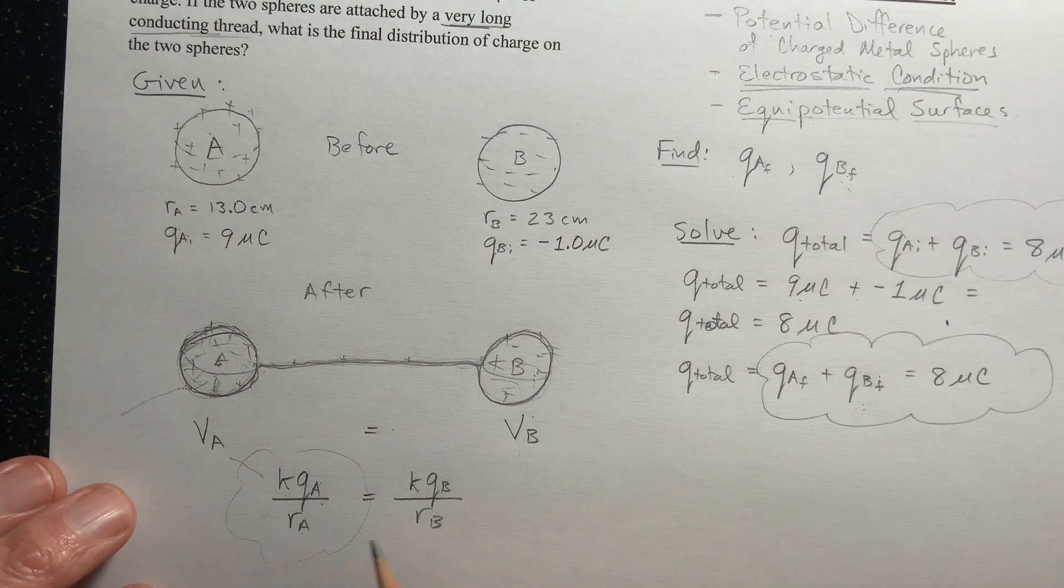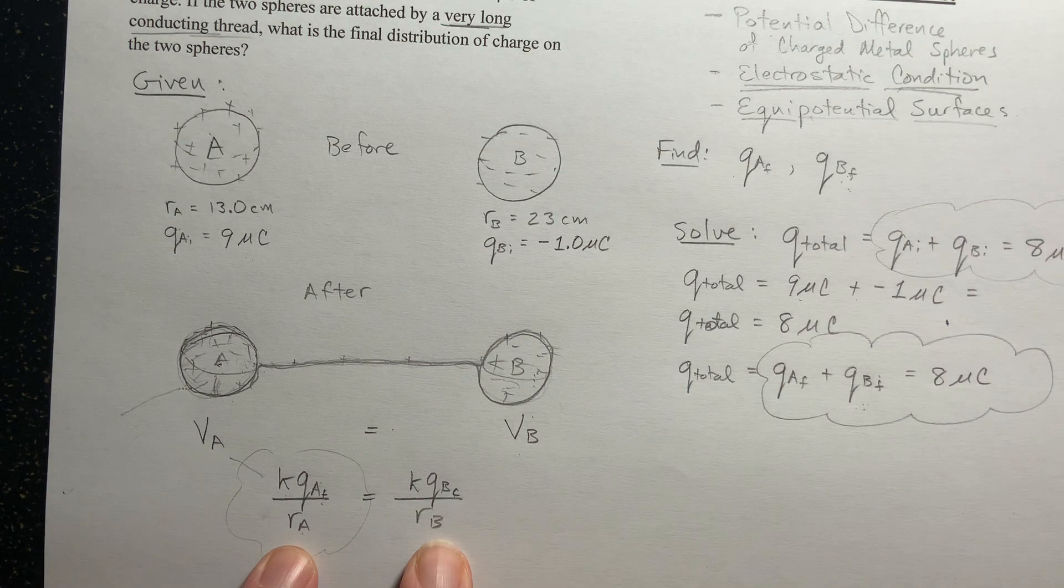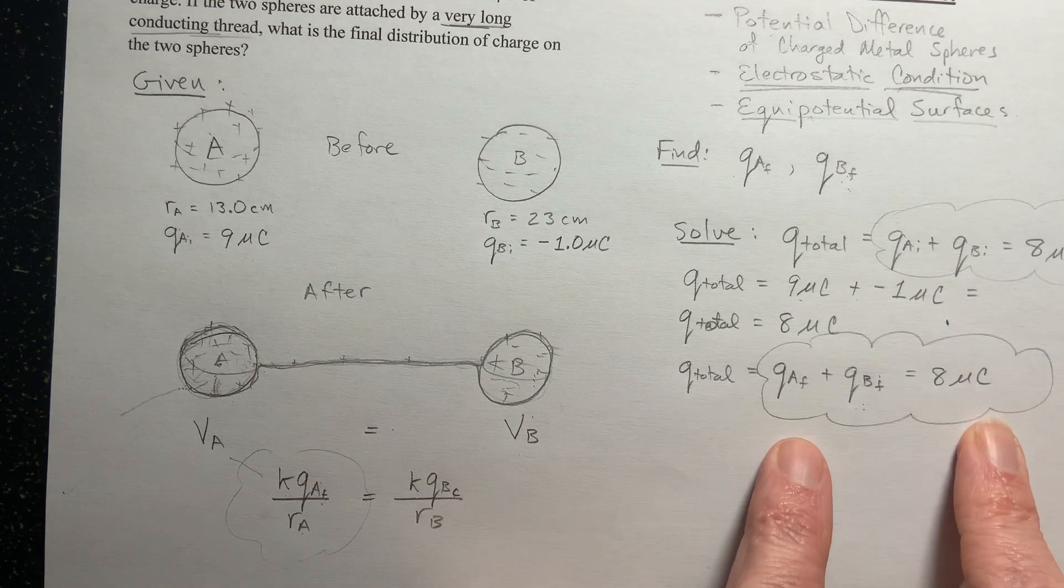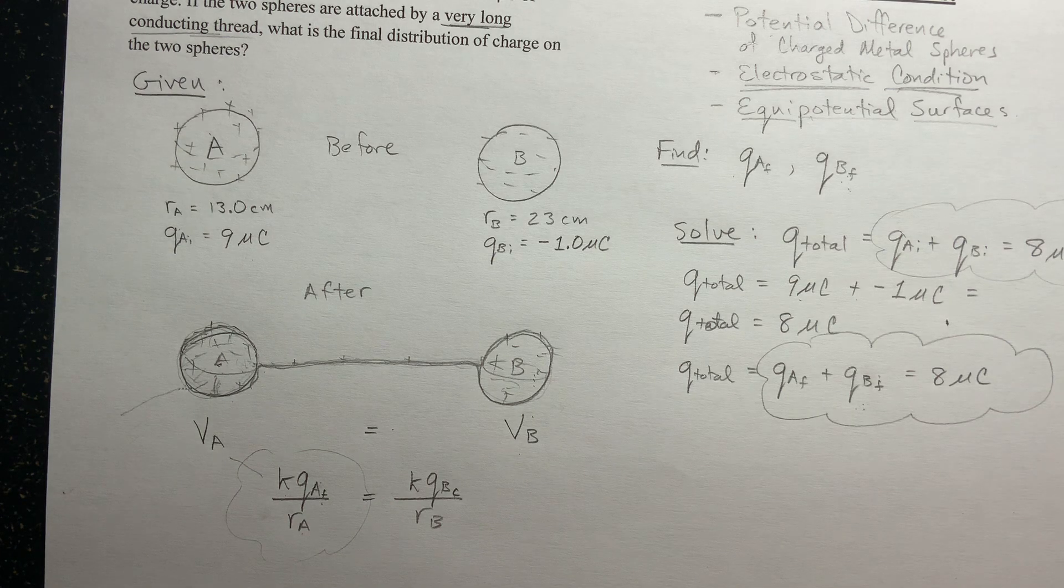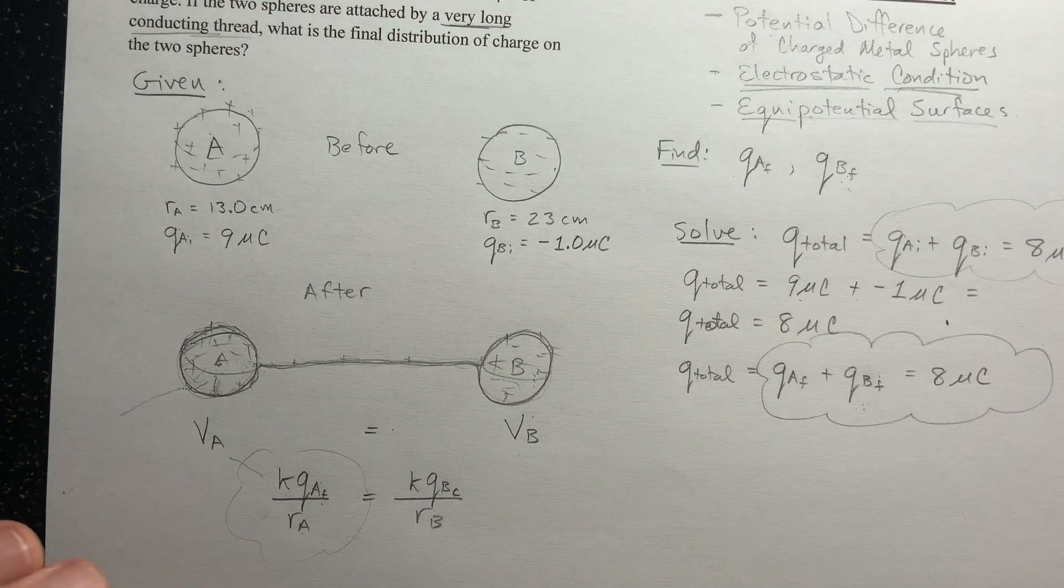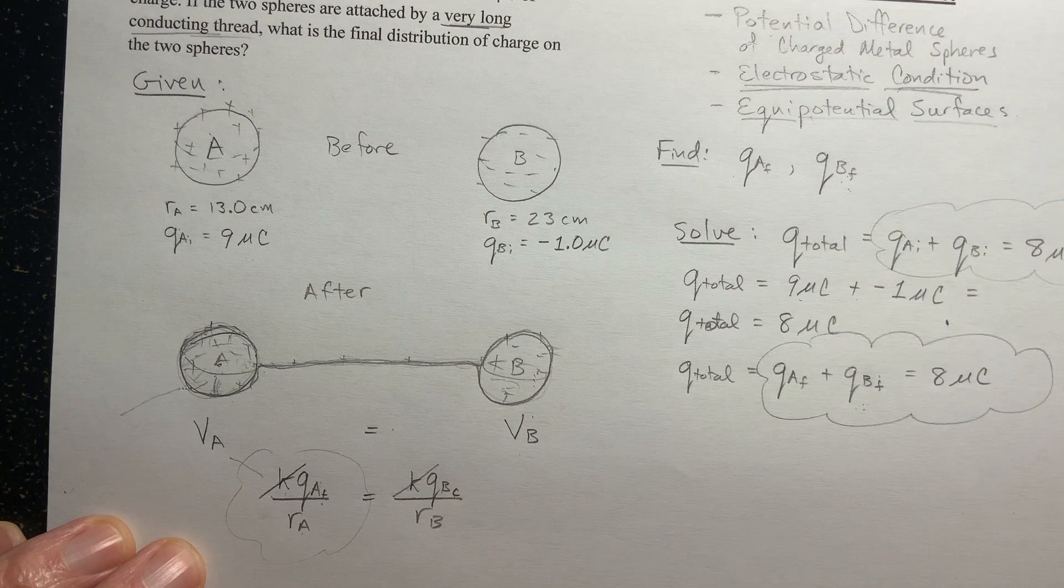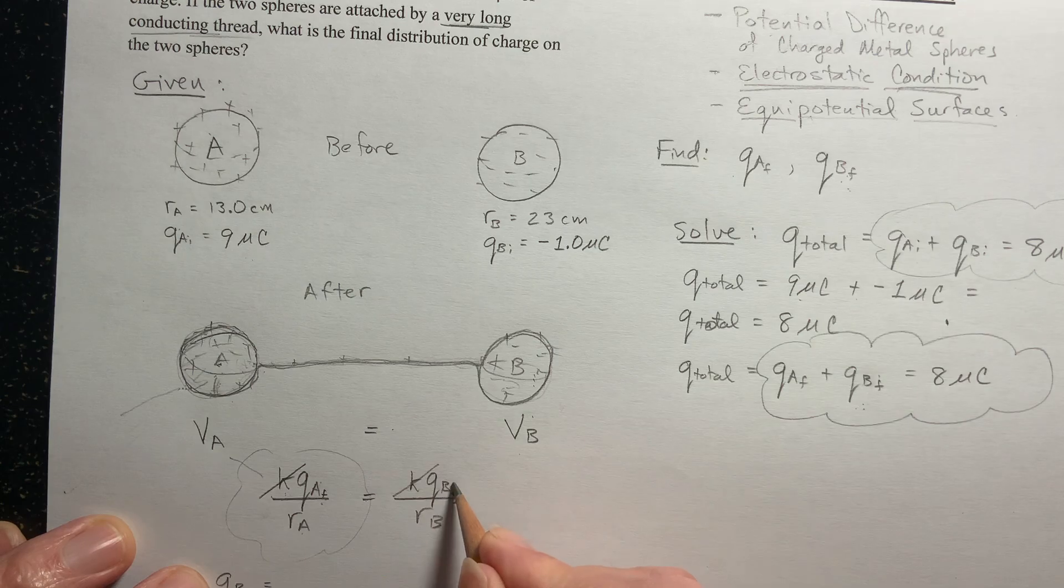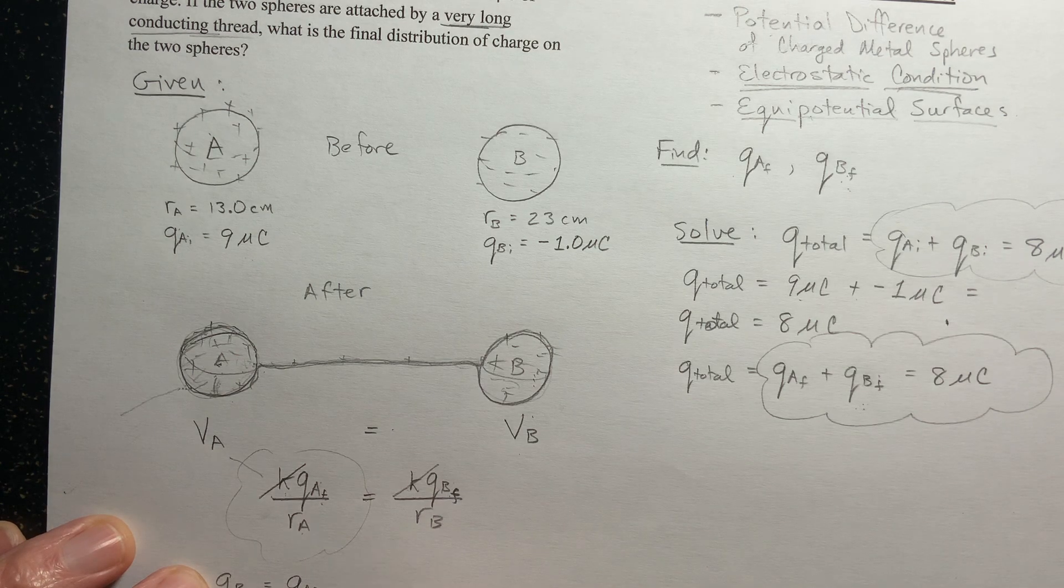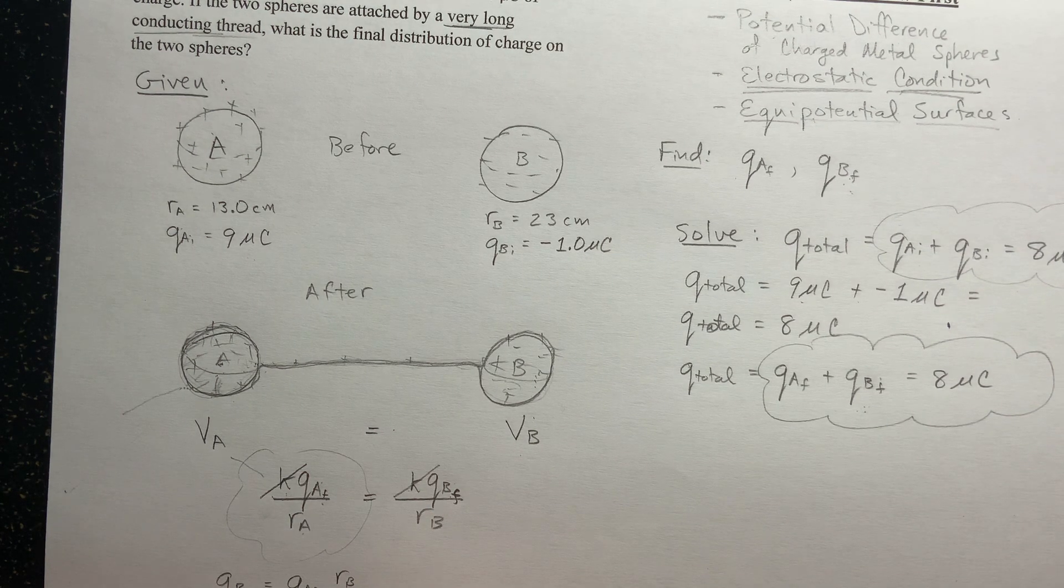Now I think one thing we can see here is that these are the final charges. And look, here I have an equation with the same two unknowns as this equation. So I've got two separate independent equations and two unknowns. So now it's just algebra to solve. So let's go through that. First of all, the electric constant is on both sides, so it's going to cancel out. And let's solve for QB. So QB final is equal to QA final and then multiply by R sub B over R sub A.